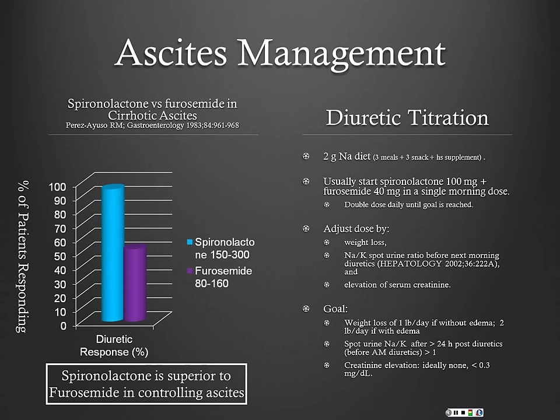Regarding diuretics — what's the single most important medication in patients with cirrhotic ascites? If you only had to choose one medicine, it would be aldactone. The graph here compares diuretic response, spironolactone versus furosemide, and the diuretic response is significantly greater in patients on spironolactone.